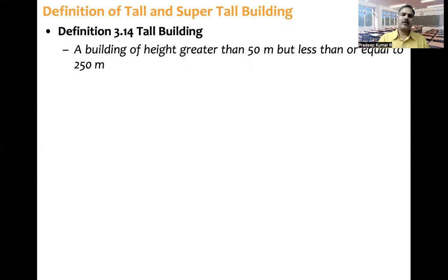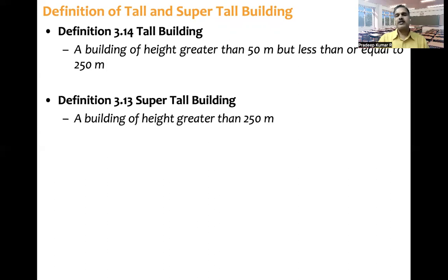So that means it is something around 80, 85 floors building. So that is up to 250 meters. Suppose if a building's height is more than 250 meters, say 275 or 300, then it goes under super tall building. But that is called code exceeding structure because this code means from 50 meters up to 250 meters height buildings.